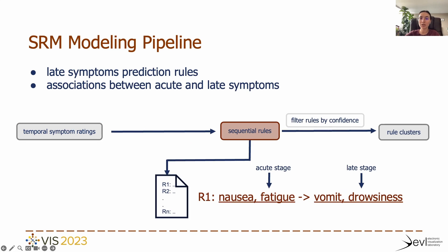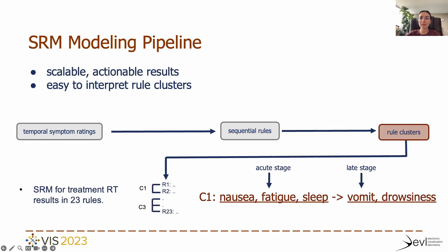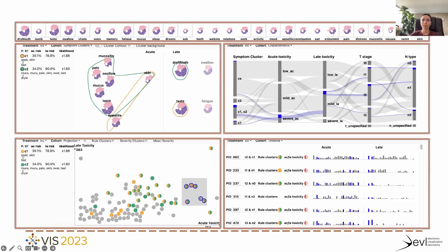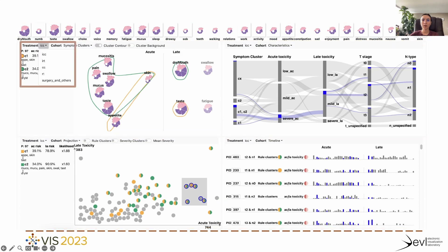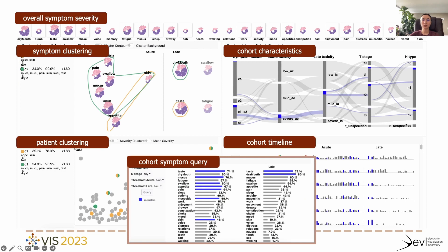Here is an example rule showing that nausea and fatigue, which are common during the acute stage, precede vomiting and drowsiness in the late stage. To ensure reliability, we keep only the rules with high enough confidence in the predicted patterns. Because the filtered rules still include many overlapping patterns, we perform rule clustering to increase interpretability and actionability. The front-end of our system is split into a top static view and configurable quadrants, each of which can show details about one of the five available treatments. There are six visual encodings related to symptom and cohort sequential rule mining analysis.